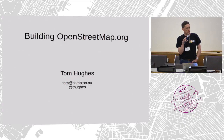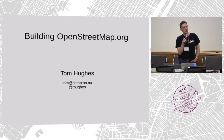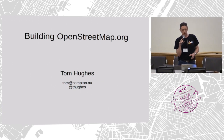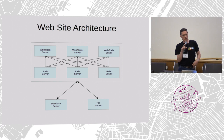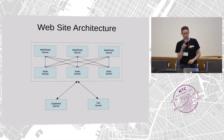Good afternoon everybody. My name is Tom Hughes. I've been involved with OpenStreetMap for about nine years now, and for eight of those I've been helping look after the servers and in particular the code that sits behind the OpenStreetMap.org website. That's what I'm going to be talking about this afternoon. This is a quick overview of how the servers you're talking to every time you go to OpenStreetMap.org come together.